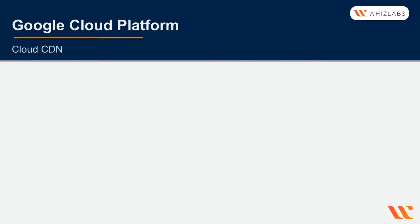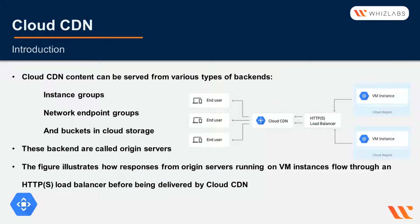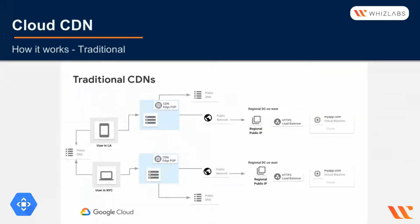In this lecture we will explore Cloud CDN. Cloud CDN is a content delivery network that works with the HTTPS load balancer. The load balancer provides the front-end IP addresses and ports that receive requests, and the back-end to respond to these requests. Cloud CDN content can be served from various types of back-ends like instance groups, network endpoint groups, and buckets in Cloud Storage. These back-ends are also called origin servers. The diagram shows how responses from these origin servers running on VM instances flow through an HTTPS load balancer before being delivered by Cloud CDN.